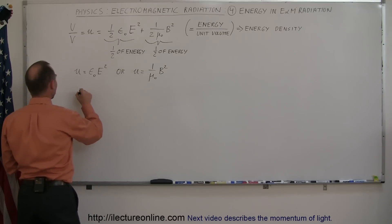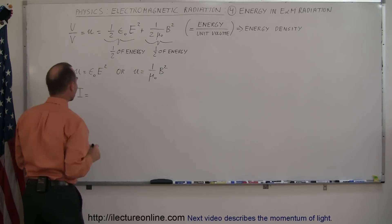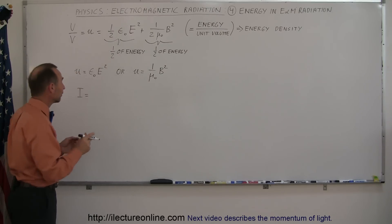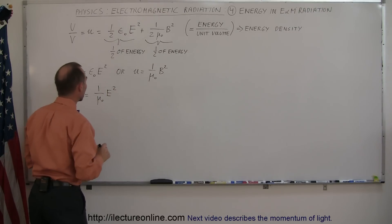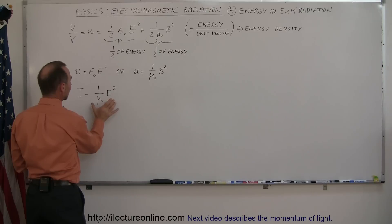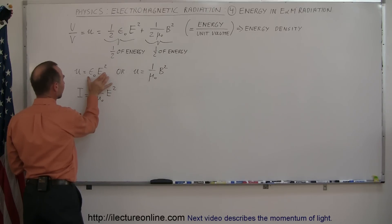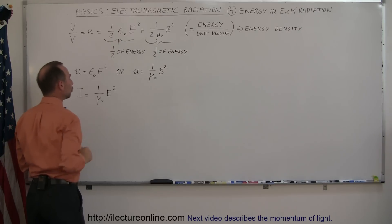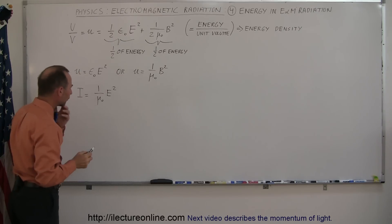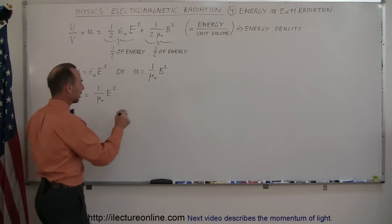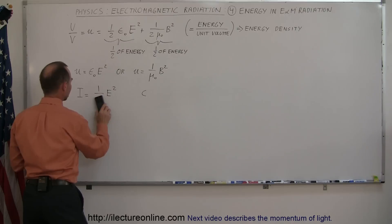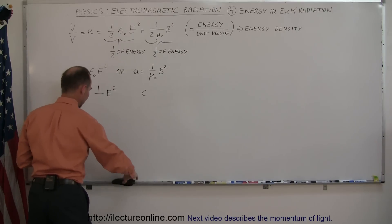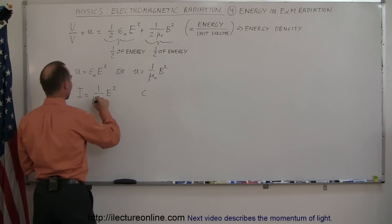From the Poynting vector, we found the intensity of light is equal to one over mu-naught times c times E squared. We're going to take this and make it look like the energy density equation to relate I to u. The speed of light c is defined as one over the square root of epsilon-naught times mu-naught.